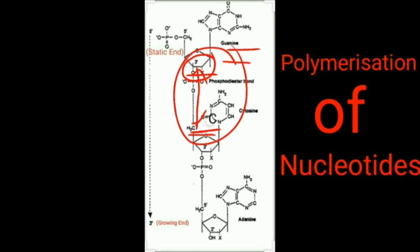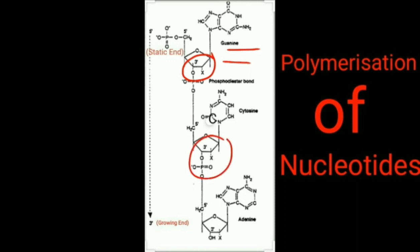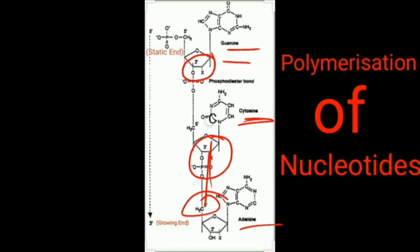The direction of the phosphodiester bond is 3' to 5'. The 3' OH group of the CTP then attacks the 5' phosphate of the next nucleotide. Only the 3' end keeps growing while the 5' end remains static — so the 5' end is the static end and the 3' end is the growing end.